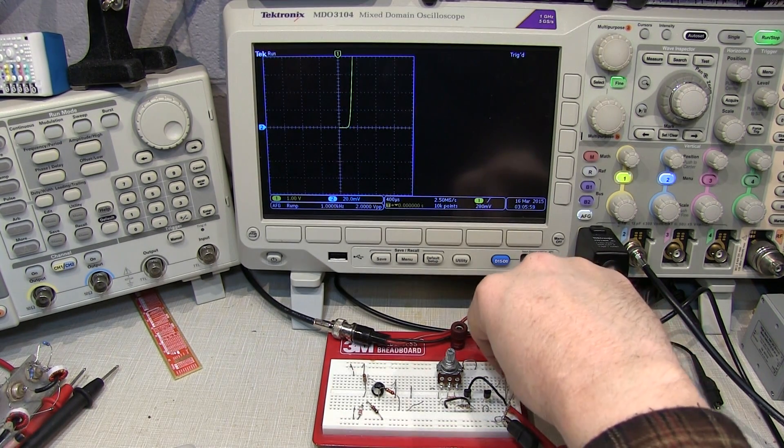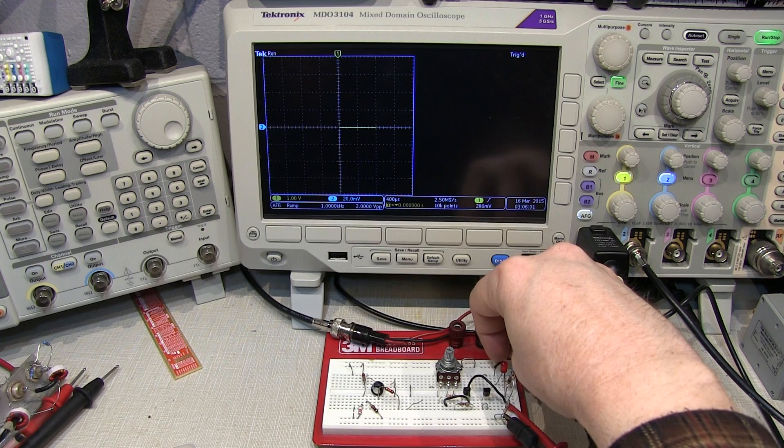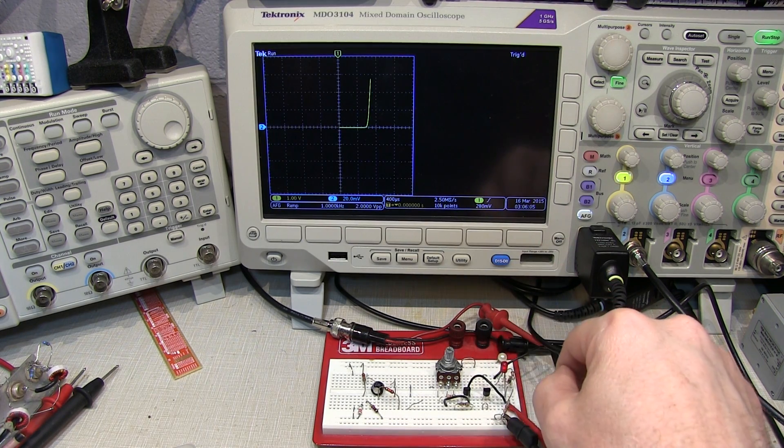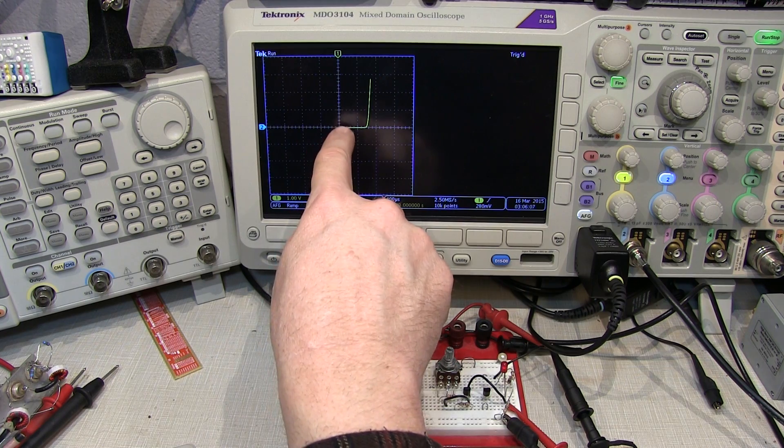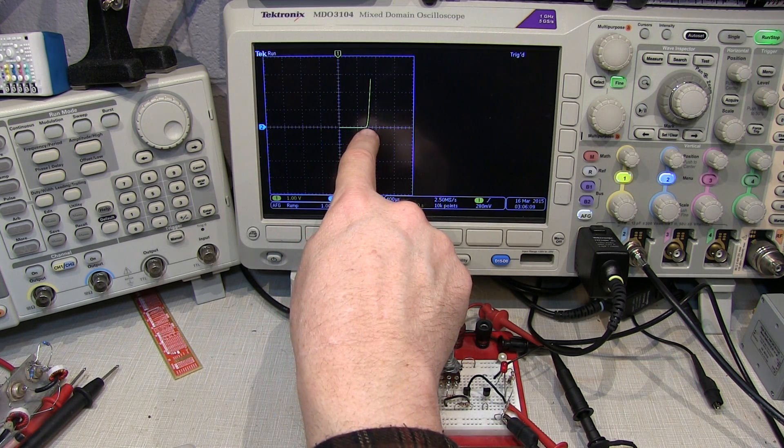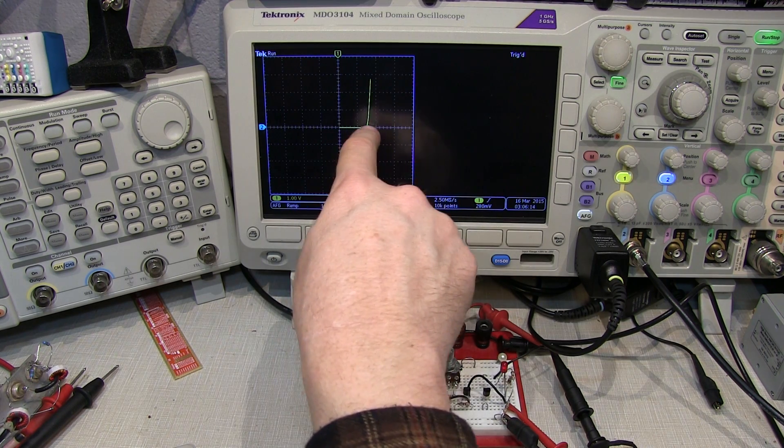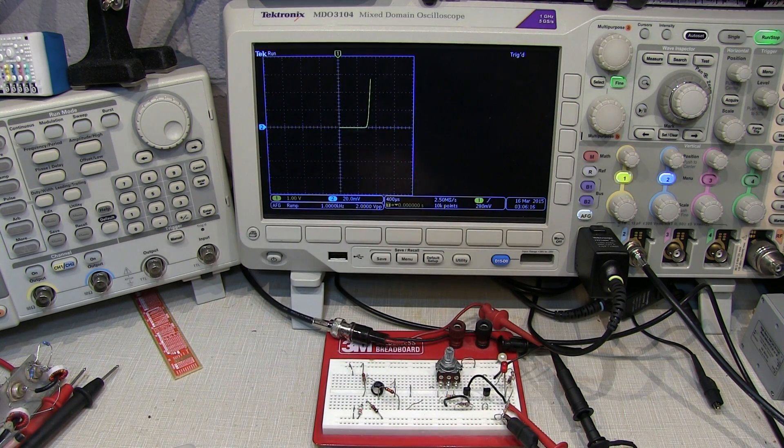Now if I move the function generator to an LED, here's an old red LED I've got on the board here, and we can see the forward voltage of that LED is closer to about 1.6 volts or so before it turns on, and we see the diode characteristic of that LED.